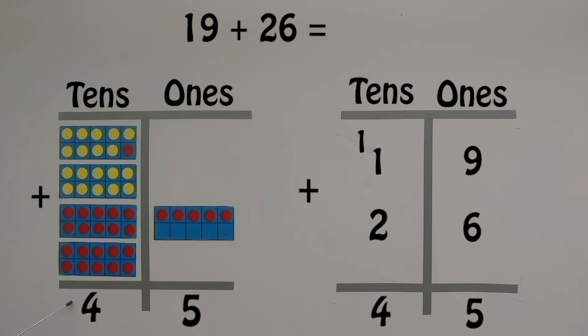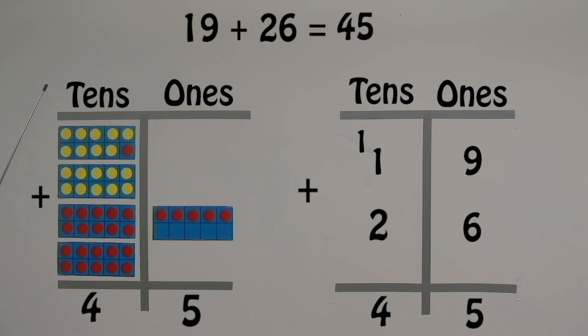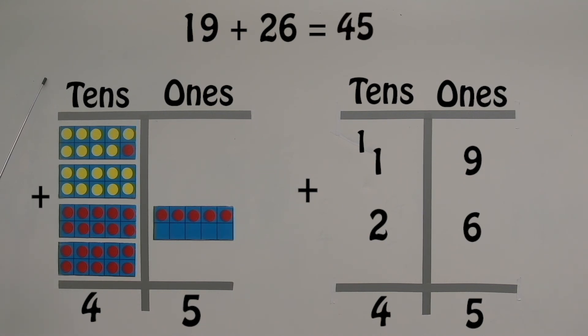4 tens and 5 ones make 45. So, 19 plus 26 equal 45.